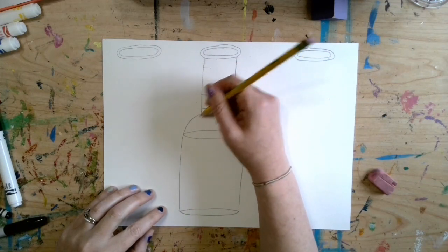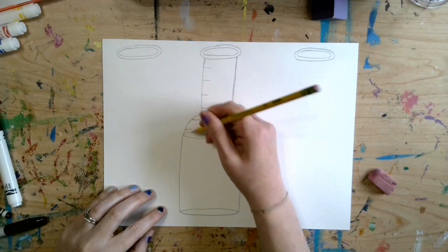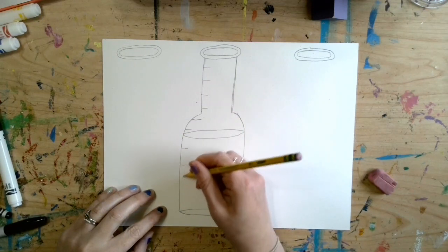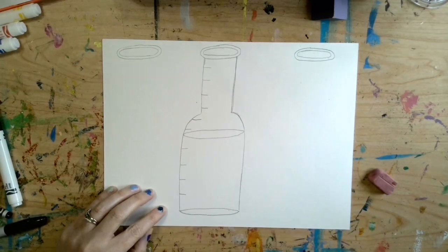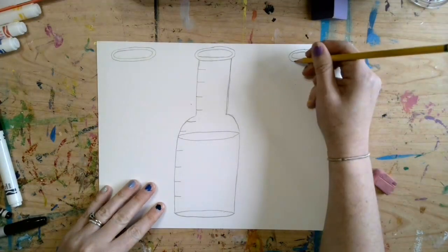Not bad. Now we know beakers have lines on them so you can tell how much liquid you are putting in, it's like a measurement. If you ever cook or bake at home and you use a measuring cup, you would see these types of lines that have numbers next to it.